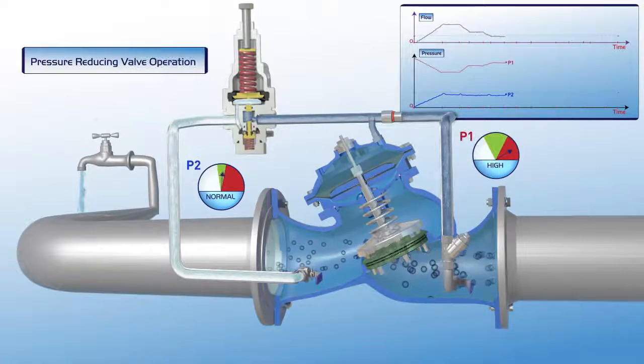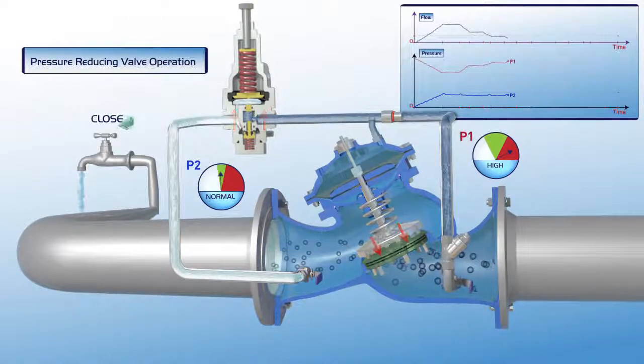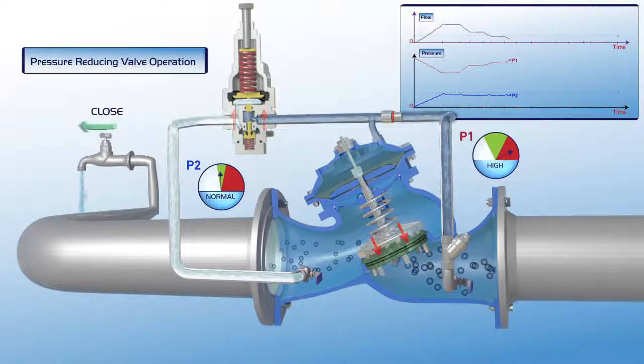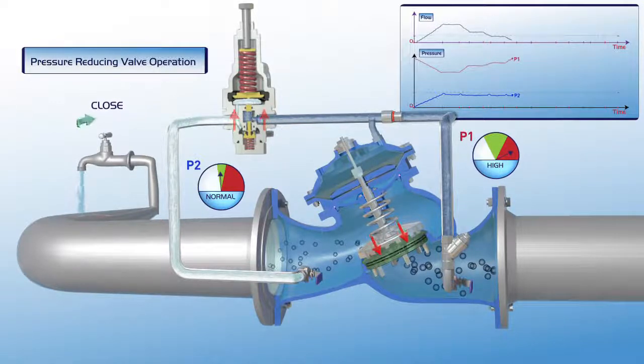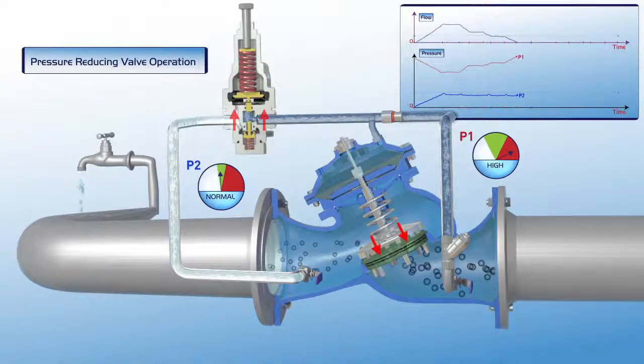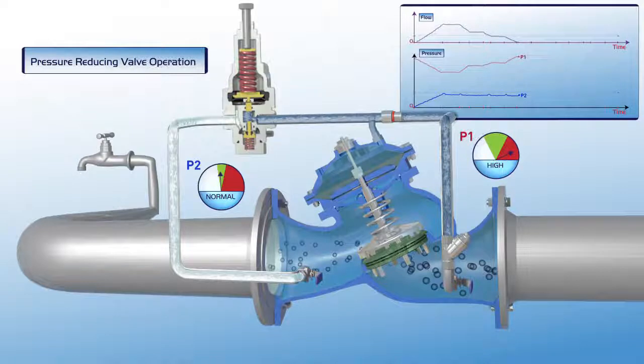Further reduction in demand for water, right down to zero demand, results in full closure of the valve. As presented on the chart, when the flow is zero, the upstream pressure is very high, and although the valve is closed, the downstream pressure remains stable at its designated set point.